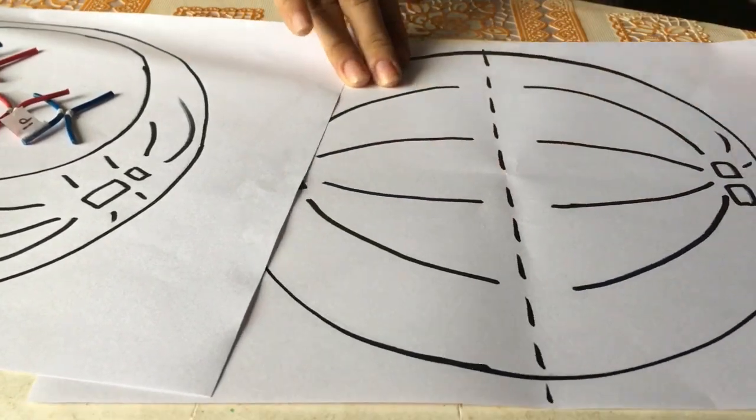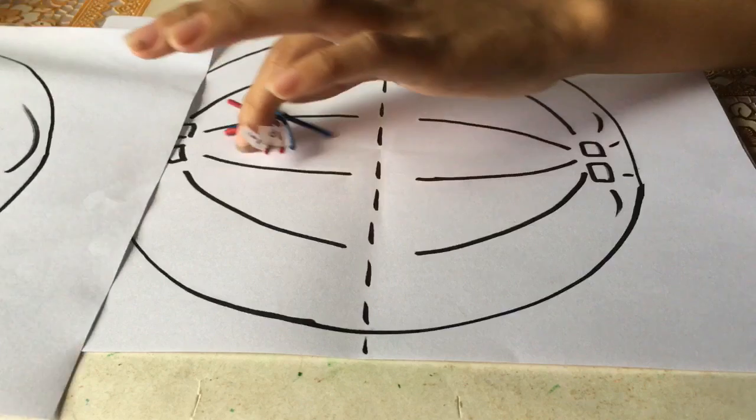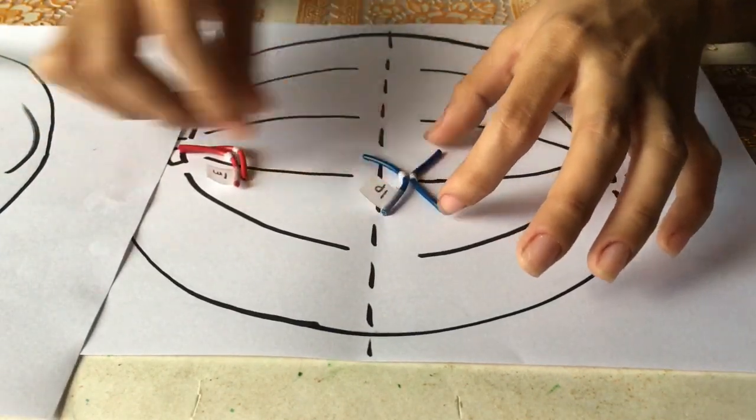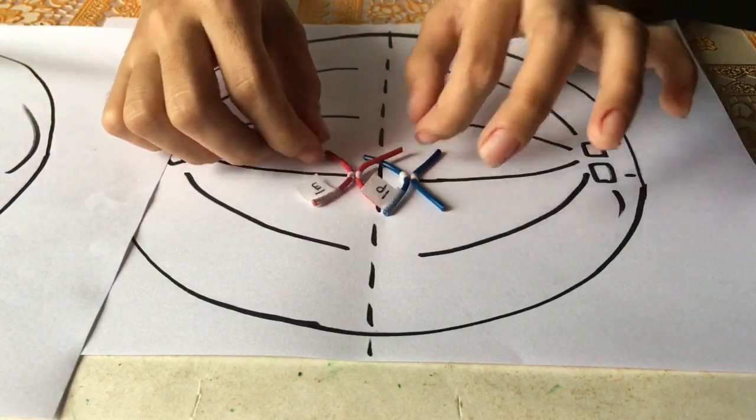In metaphase I, the chromosome pairs line up next to each other along the center of the cell. The centrioles are now at opposite poles of the cell with the meiotic spindles extending from them. The meiotic spindle fibers attach to one chromosome of each pair.